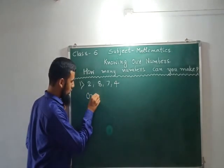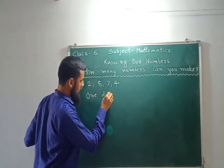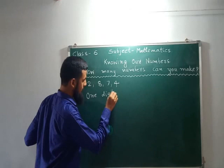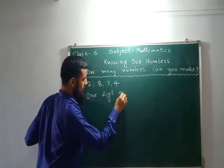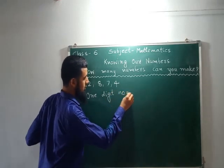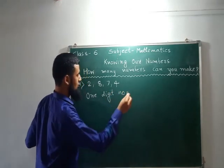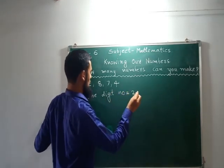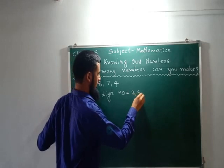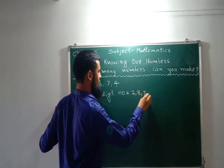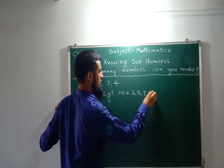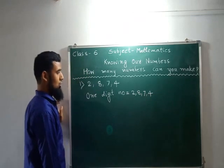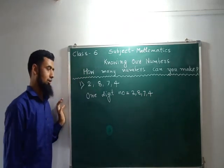So, 1-digit numbers are equal to: 2, 8, 7, and 4. Not more than that.